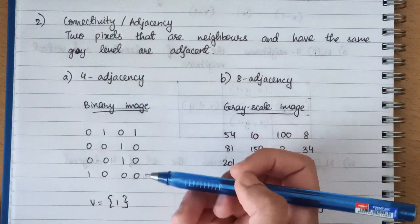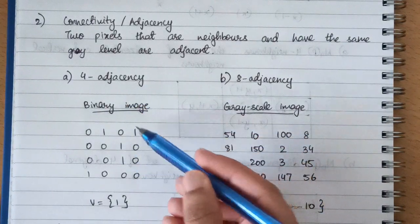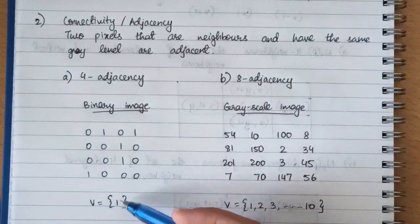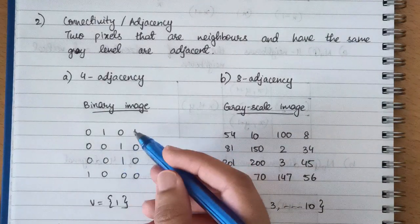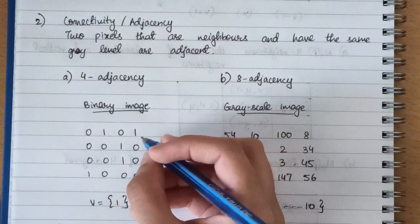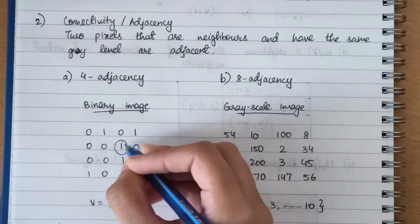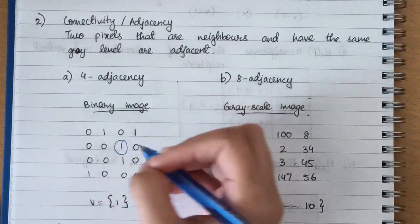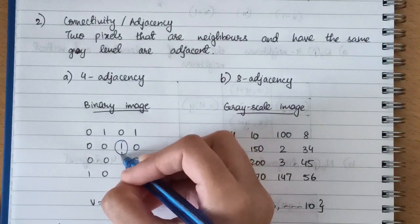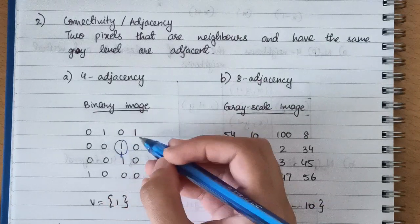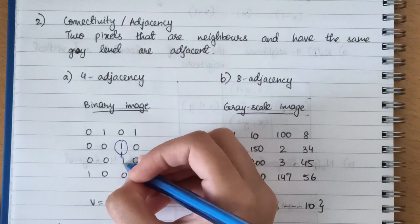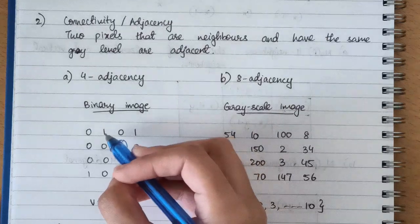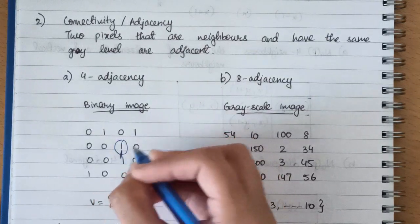Let's see this with the help of an example. Suppose we have a binary image and a set V = {1}, which means only elements of this set can be included for making connections. If we choose this pixel, it can be connected to only this pixel using four adjacency, and none other, because the other connected elements are diagonal. This connection is known as four adjacency.